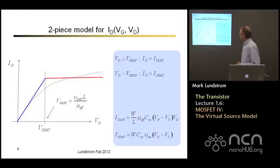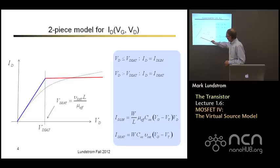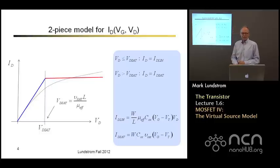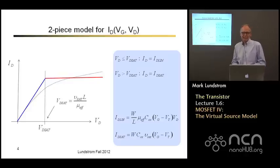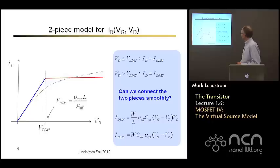The two-piece model is easy to apply. We apply a drain-to-source voltage and ask: are we less than VDSat, are we bigger than VDSat, and we use the appropriate expression. But we'd like a smooth connection between those two regimes. The question is, how do we connect those two pieces smoothly?